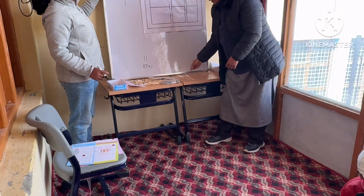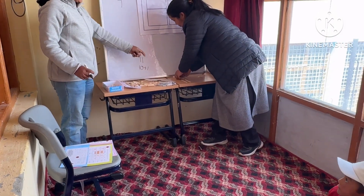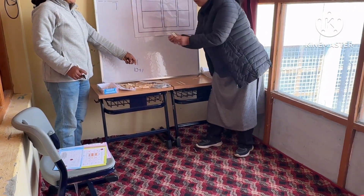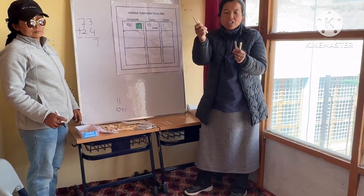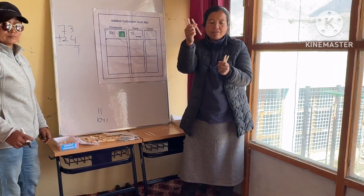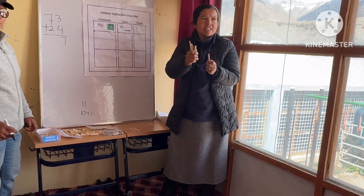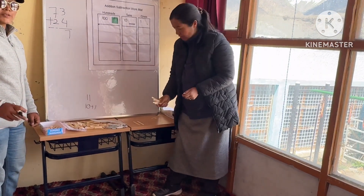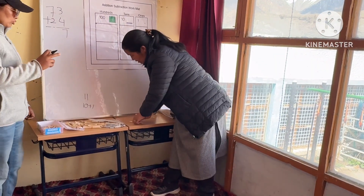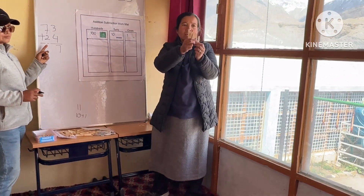Seven plus two. One, two, three, four, five, six, seven. Seven plus two: eight, nine.